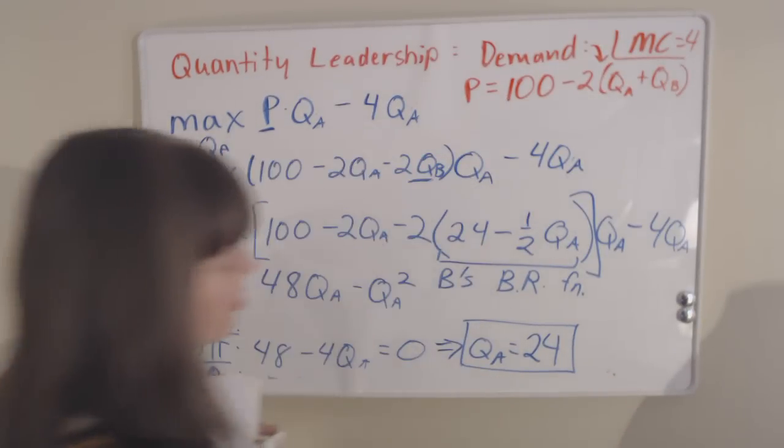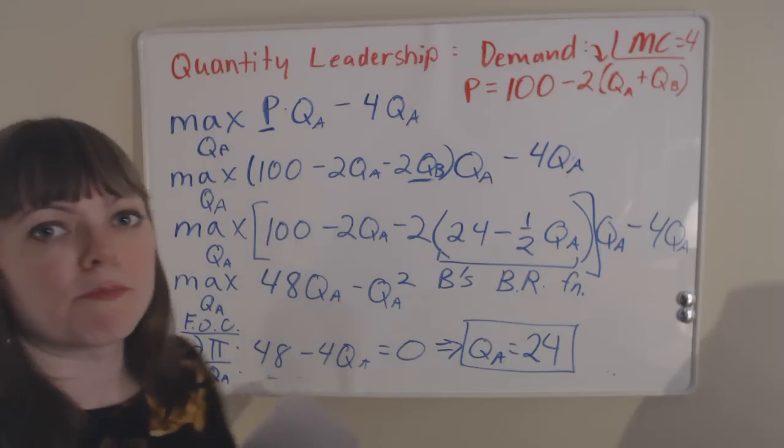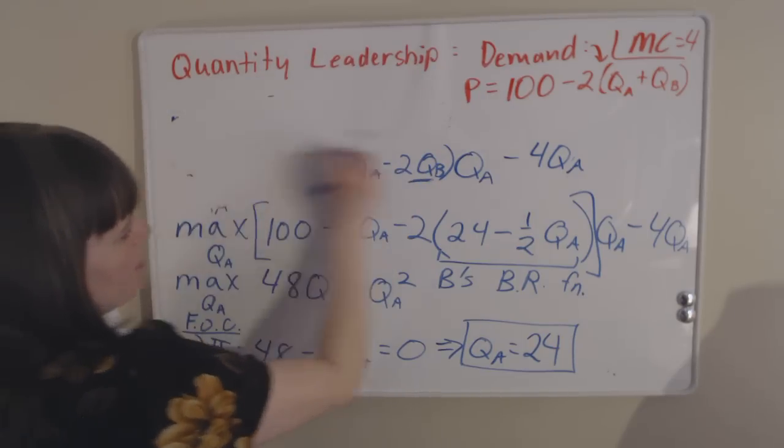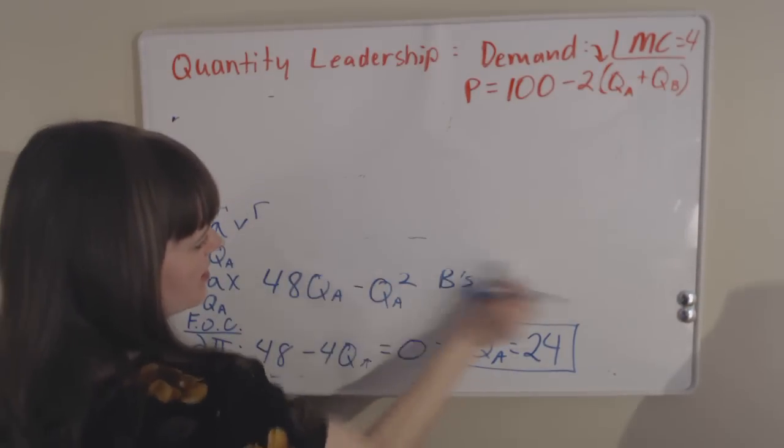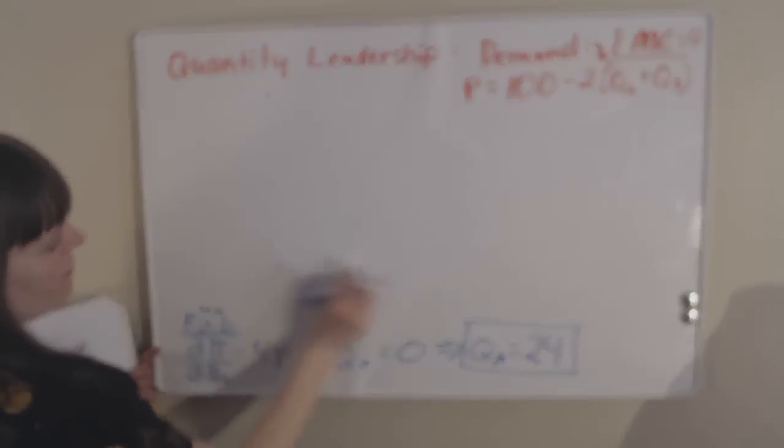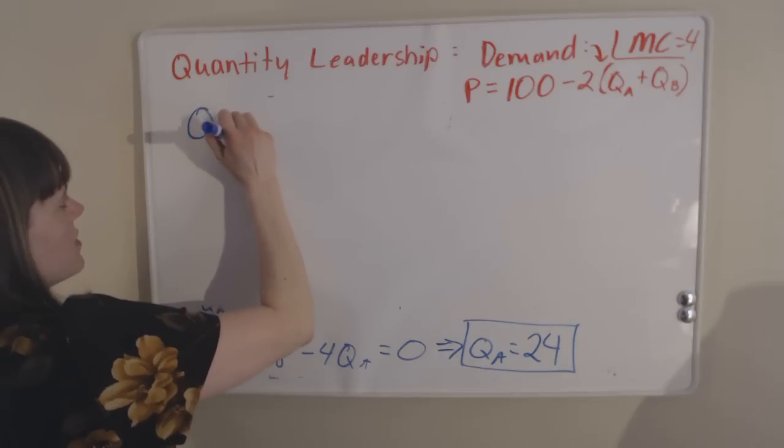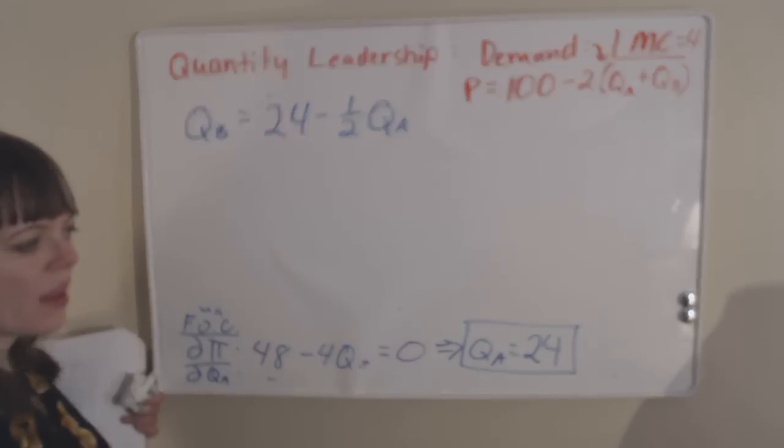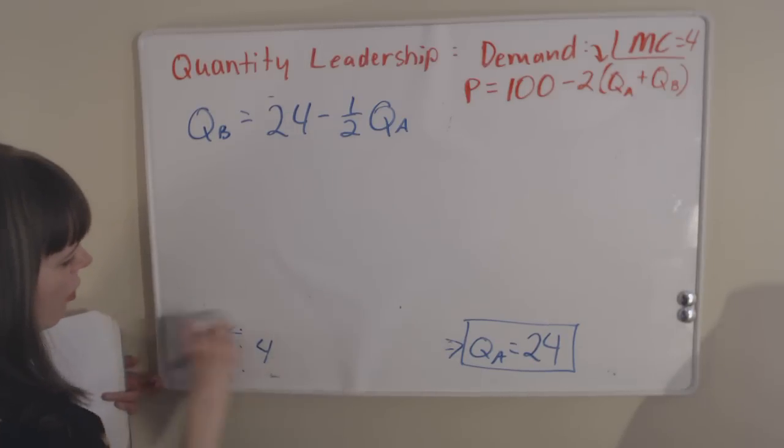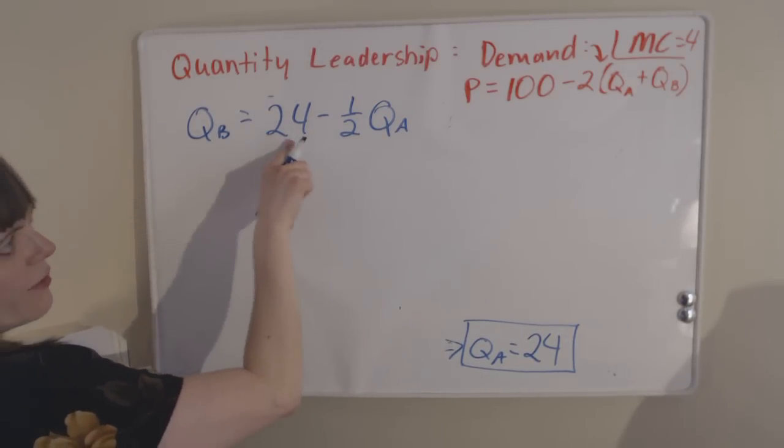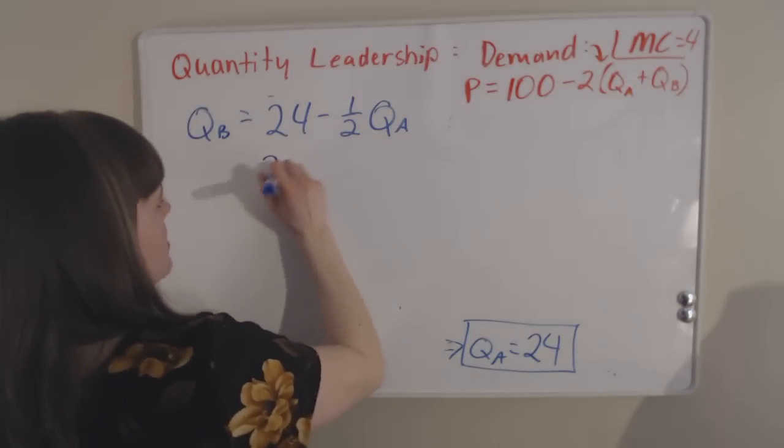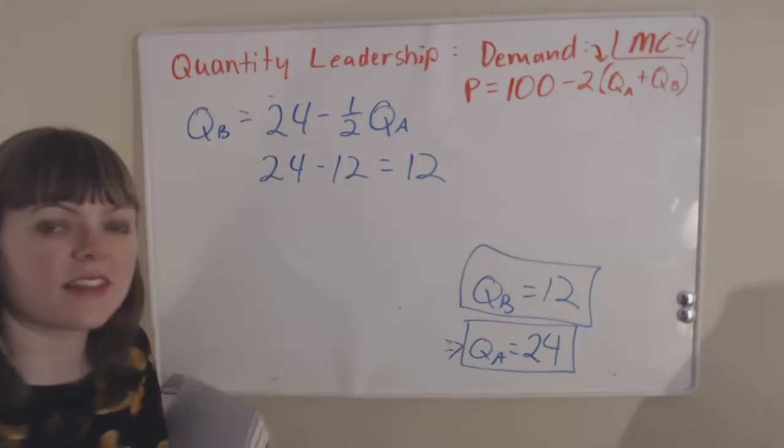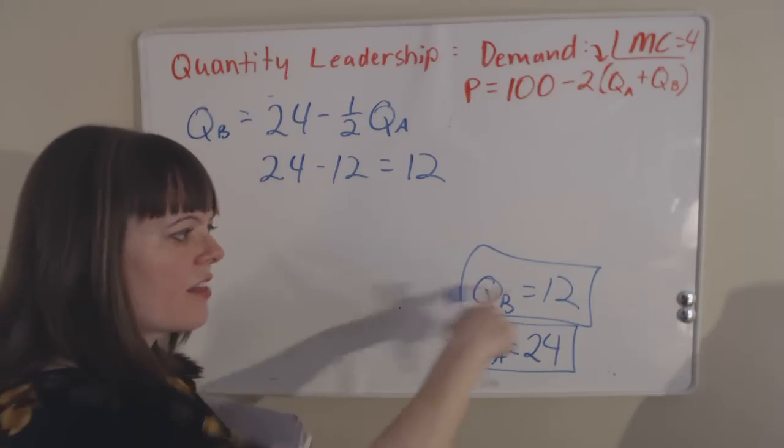We know how many units firm A will produce. So then we need to go back and figure out how many units will firm B produce. To do that, we need to go find our best response function. At that time we found that firm B's best response function was that quantity B should be equal to 24 minus 1 half of quantity A. So if firm A should choose 24 to maximize their profit, then firm B is going to choose 24 minus 1 half of 24, 24 minus 12, and that's going to be equal to 12 units. So we know that firm B will produce 12 units. And that's not too surprising that the leader in the industry is going to take up a bigger share of the market than the follower will.